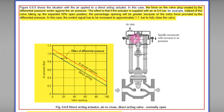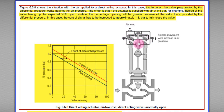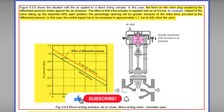For the direct acting actuator, when instrument air is applied to the top, it pushes the diaphragm downward and compresses the actuator spring. This causes the actuator stem to move downward, closing the valve seat. When the instrument air is cut off, the compressed spring returns outward and opens the valve — that's why this is called spring-to-open.